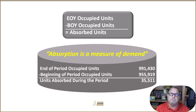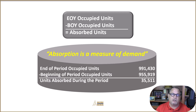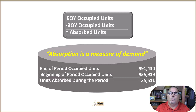This is the number one measure of demand — really consumer confidence, the renter's confidence in the market. So if we take our end of period occupied units, let's say December 31st, 2022, it was 991,430, and we subtract beginning of period occupied units of 955,919 units, then we have a total of 35,511 absorbed units. That means there were 35,511 more units rented than went vacant during this period. We don't know the total that went vacant or rented individually — we just have that net result, which is the number one measure of demand by the residents.